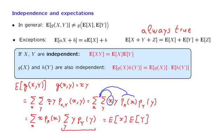Wherever there's an x, we would write g of x. And wherever there is a y, we would write h of y. And the same algebra would go through, and we would end up with the expected value of g of x times the expected value of h of y.